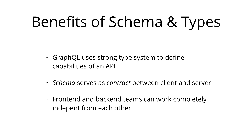Once the schema is defined, the teams working on the frontend and the backend can do their work without further communication, since they both are aware of the definite structure of the data sent over the network. Frontend teams can easily test their applications by mocking the required data structures. Once the server is ready, the switch can be flipped for the client apps to load data from the actual API.